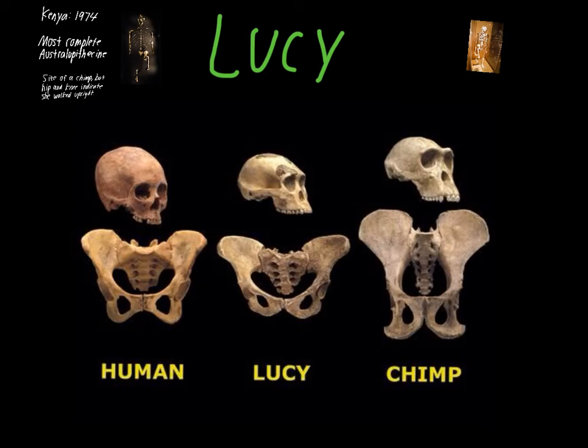The next few videos will focus on where modern people came from. We'll look at the fossil evidence for individuals from the Homo genus that are similar to us, and then the transitions that led up to modern people on the planet. Thank you for watching — make sure you answer the questions at the end of the video.